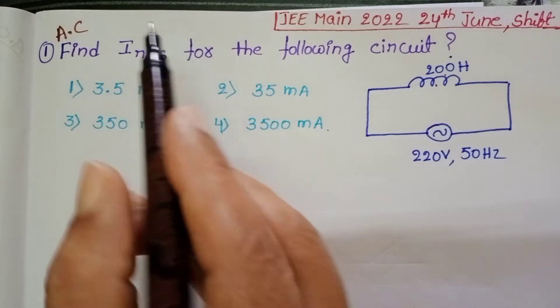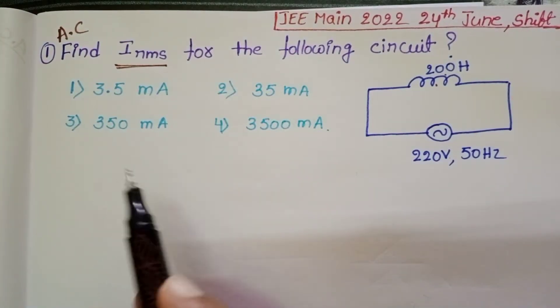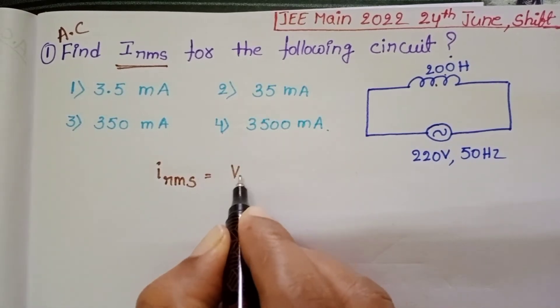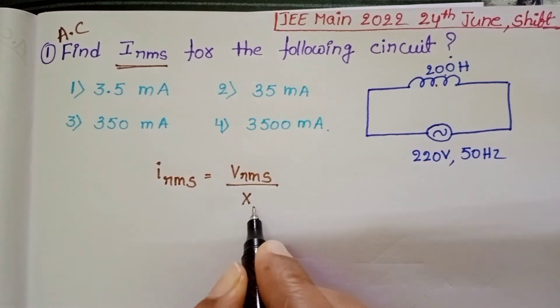In this question we want to find out IRMS value using a direct formula. IRMS equals VRMS by inductive reactance.